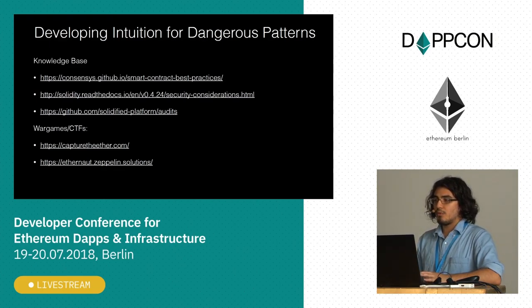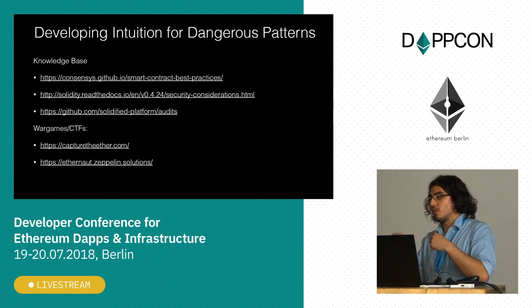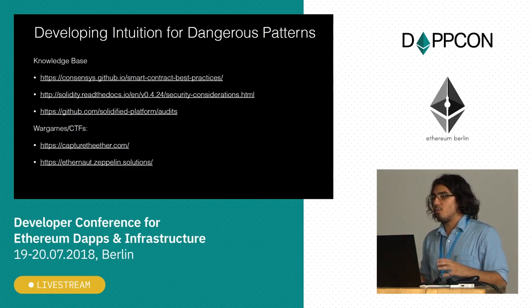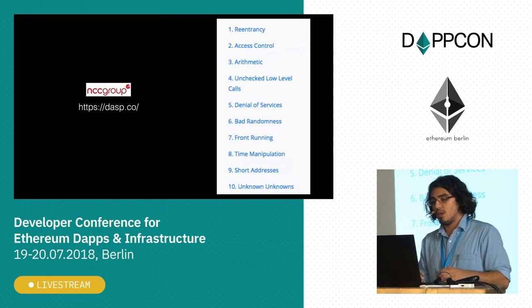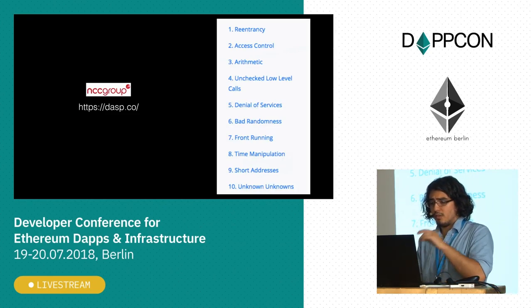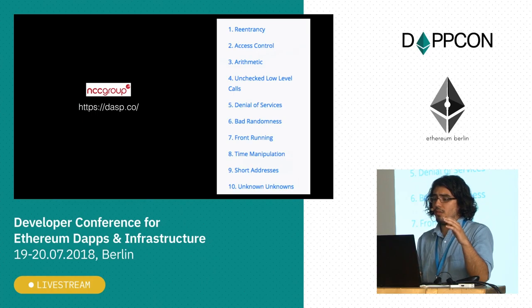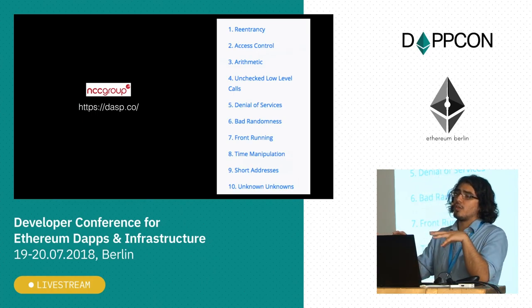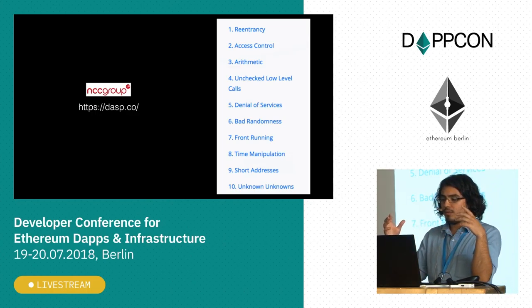There's also war games or Capture the Flags — Capture the Ether and Zeppelin have created these little games. They have toy contracts with flaws in them, and you can get points on their leaderboard for figuring out what the flaw is and exploiting it. This is also a really good way to develop intuition. And then the NCC Group released their top 10 vulnerabilities in smart contracts. These are concepts that, once you learn them, you get a feeling where you look at code and think, hmm, there's something wrong here — and from there you can build a vulnerability.